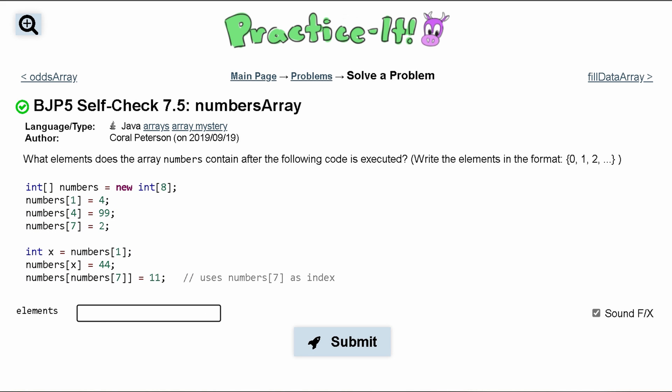So we're asked what elements does our array numbers contain after our code is executed? Well, initially after our first line is executed we're just going to have zeros in here.